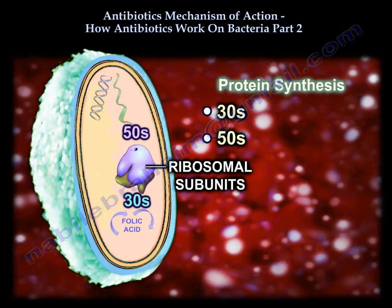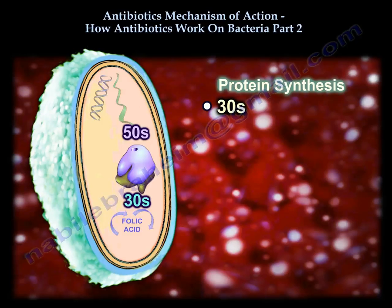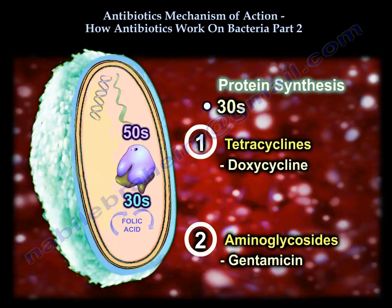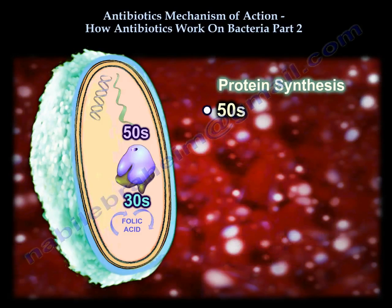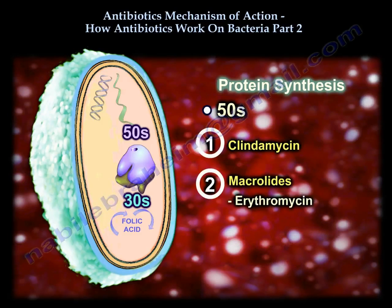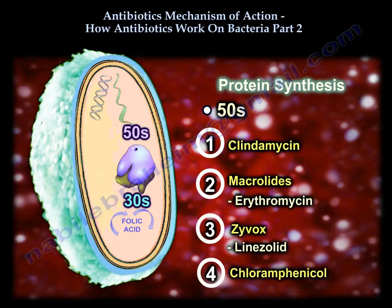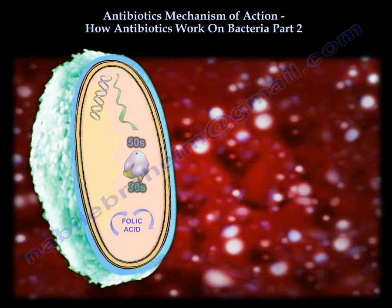For protein synthesis, the 30S subunit inhibitors are the cheaper ones — like tetracyclines used to treat Lyme's disease or used frequently in open fractures. Aminoglycosides like gentamicin also target 30S. The 50S subunit inhibitors are bigger, more expensive drugs like clindamycin, erythromycin, and linezolid — not used as first-line.